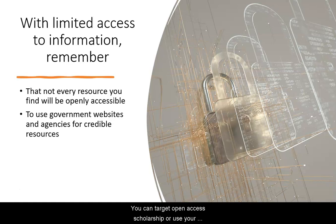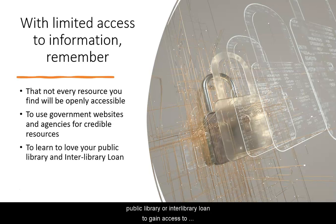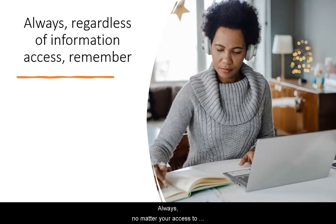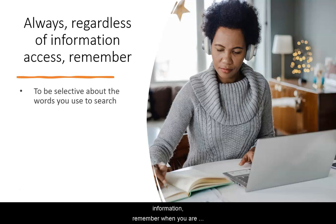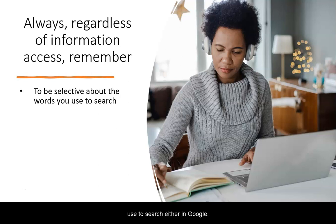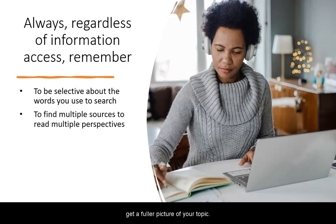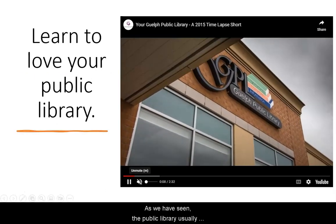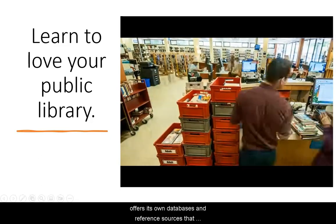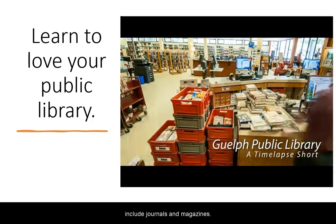You can target open access scholarship, or use your public library or interlibrary loan to gain access to scholarship that costs money. Always, no matter your access to information, remember when you are searching for information to be selective about the words you use to search, either in Google, Google Scholar, or a subscription database. Gather and read multiple perspectives or sources to get a fuller picture of your topic. As we have seen, the public library usually offers its own databases and reference sources that include journals and magazines.